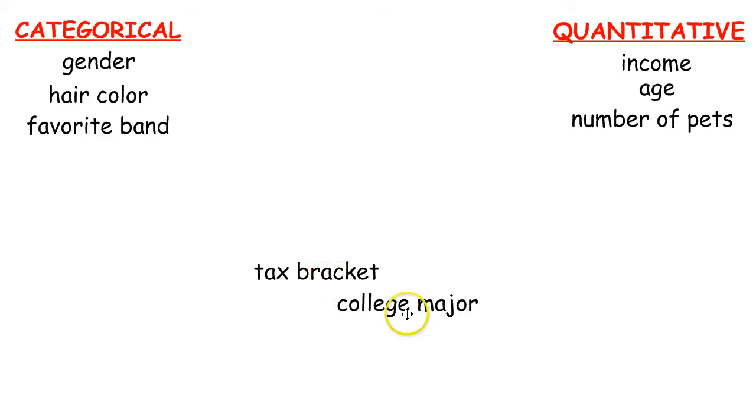I'm going to skip tax bracket for a second. And then college major. Kind of the same thing as favorite band. There's lots of different college majors you could choose from. But it's going to be a category, not a number.